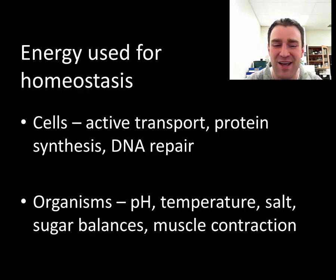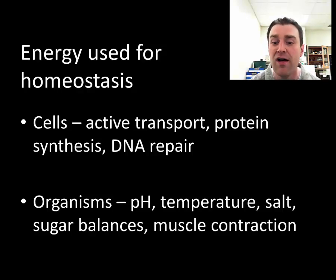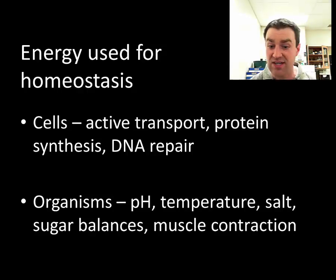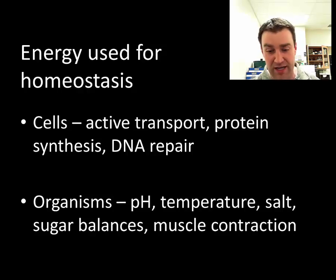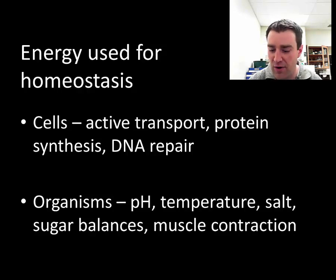Maintaining homeostasis involves many things. At the cellular level, active transport is important for maintaining the right balance of chemicals inside and outside the cell. Building proteins and repairing DNA are basic maintenance functions. At the organismal level, your body constantly works to maintain the right conditions: not too acidic or basic, the right temperature, the right level of salt and water, and the right level of sugar. For animals, muscle contraction — to escape predators, find food, or attack prey — also falls under homeostasis.